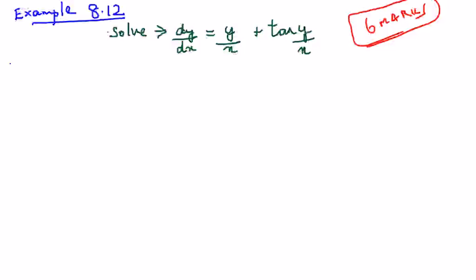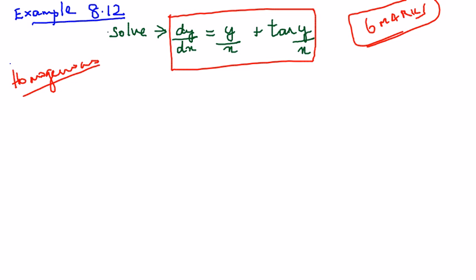Example 8.12 is typically a 6 mark sum and this is basically a homogeneous equation. Why am I saying this is a homogeneous equation? Because always remember whenever you have a differential equation,